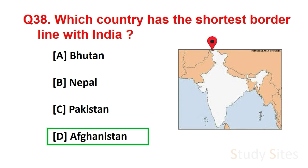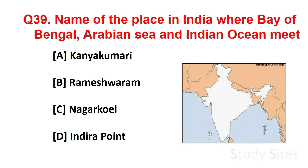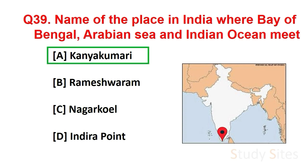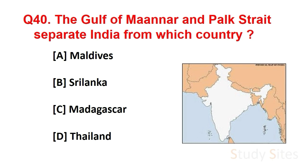Friends, this area is now under the control of Pakistan because this part of India comes under Pakistan-occupied Kashmir. Question number 39. Name the place in India where the Bay of Bengal, Arabian Sea and Indian Ocean meet. Answer is Kanyakumari. Question number 40. The Gulf of Mannar and Palk Strait separate India from which country? Answer is Sri Lanka.